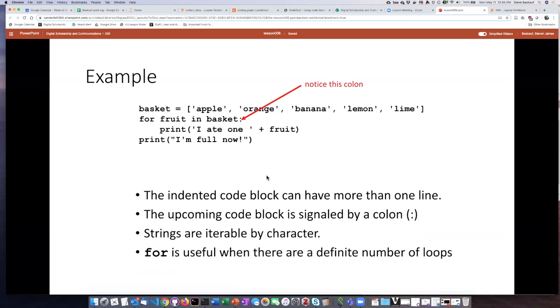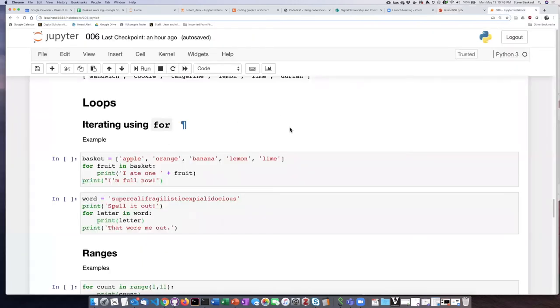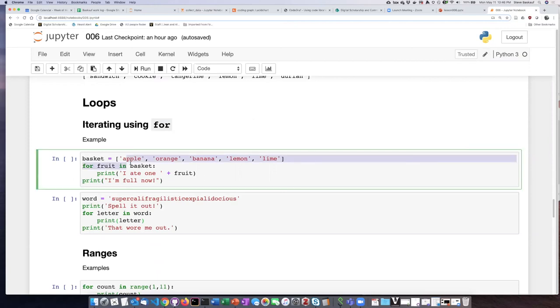So just in summary, we use a for loop anytime we want something to loop a definite number of times. We want it to loop one time for each item in the list, or one time for each character that's in a string. So let's go ahead and try a for loop. So here's the example I just talked about. Let's go ahead and run it.